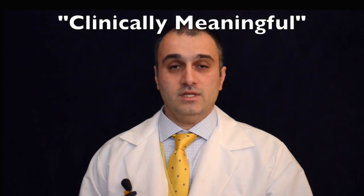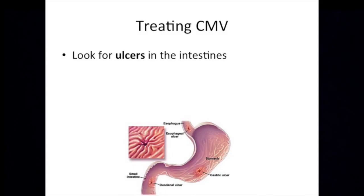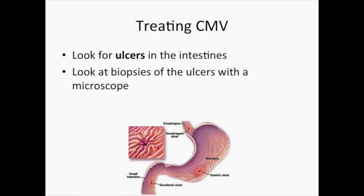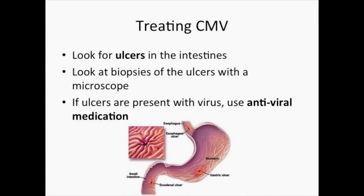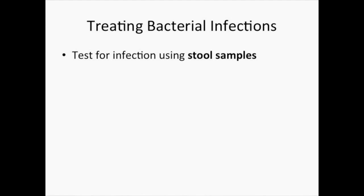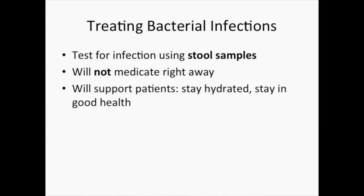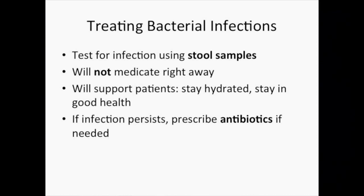Each of these infections are treated differently. We'll discuss treatment of C. diff further in another video, IBD School 221. As far as CMV, when we detect CMV in the blood, we can't tell right away whether or not it is clinically meaningful, which means it could be causing a health problem. We will look for ulcers in the intestines and look at biopsies of the ulcers under a microscope for evidence of CMV. If there are ulcers present with virus in them, we often treat the patients with an antiviral medication. We test for the more common bacterial infections using stool samples. We do not medicate right away to help these infections, as they often go away on their own. But we will support patients through the infection, making sure they stay hydrated and they can take care of their physical health. If one of these infections persists, we will prescribe antibiotics if needed.